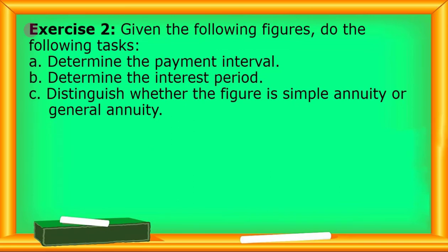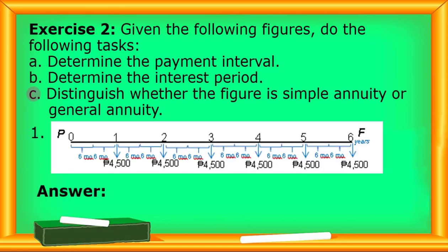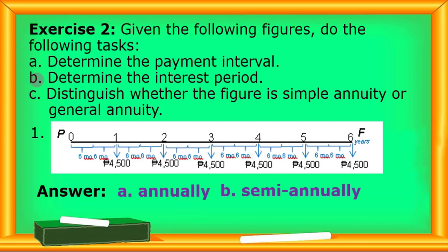For exercise number two, given the following figures, determine: A) the payment interval, B) the interest period, and C) whether the figure is simple annuity or general annuity. For number one: the payment interval is annually or yearly. The interest rate is semi-annually. So for letter A, the payment interval is annually; for letter B, the interest period is semi-annually because it's every six months; and for letter C, since annually and semi-annually are not the same, it's a general annuity.